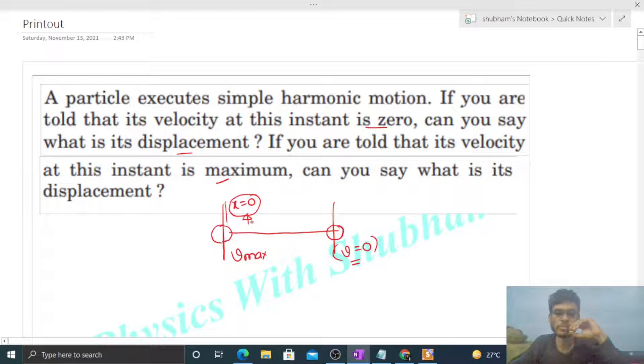So if we talk about displacement, when the particle's velocity is maximum, in that case the particle's displacement from the mean position will be zero. And when the particle is at the extreme position, where its velocity is zero, in that case the displacement of the particle from the mean position will be equal to the amplitude of SHM. If you know the value of amplitude, then we can tell about the displacement of the particle.